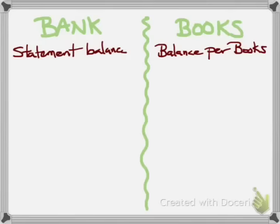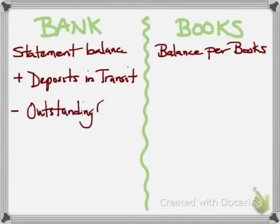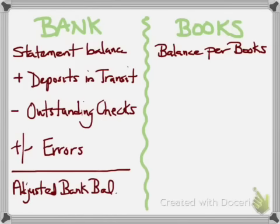Focusing first on the bank side, you start with the statement balance and add or subtract reconciling items. The most common are deposits in transit. Sometimes you've made a deposit in the afternoon — after 2 p.m. — and the bank won't record it until the next business day. You may have recorded it on December 31st, but the bank records it January 2nd. So deposits in transit mean the bank statement balance is too low, and you need to add those deposits.